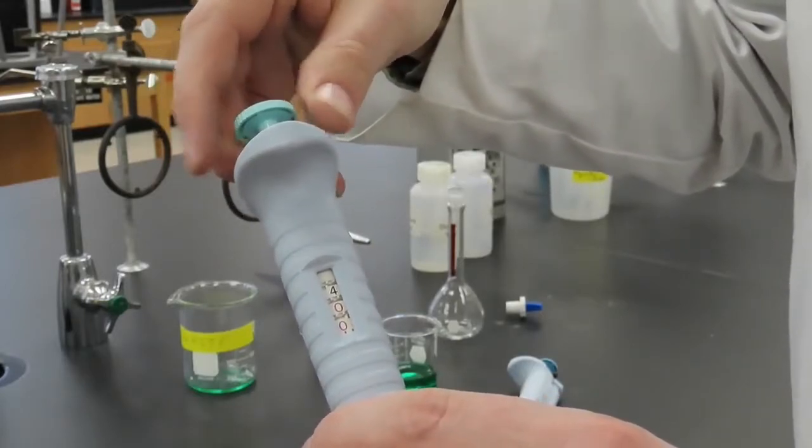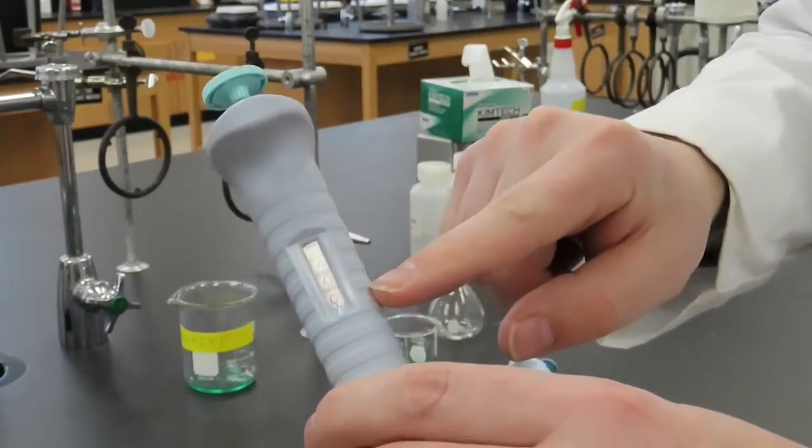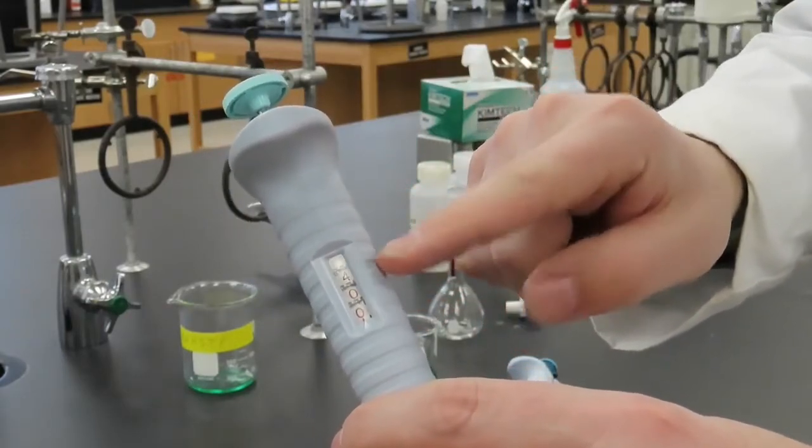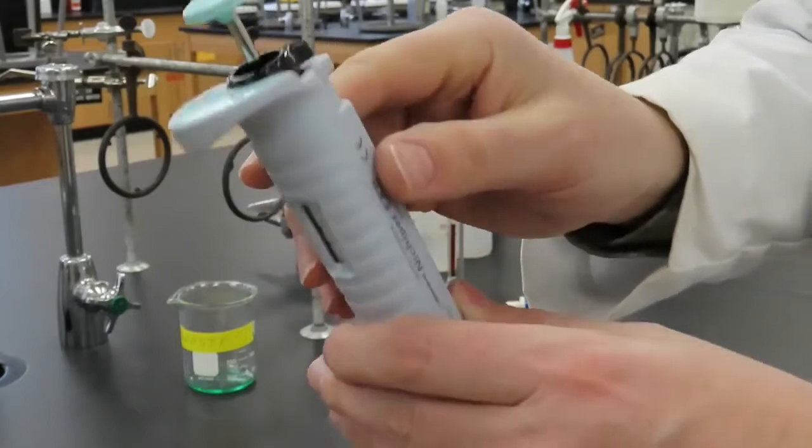Now it is set at 4.00 milliliters. If this is the volume we want, we then lock the volume locking ring and proceed.